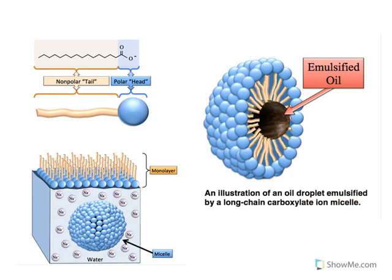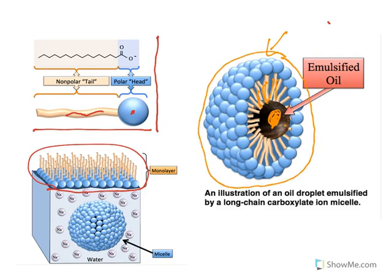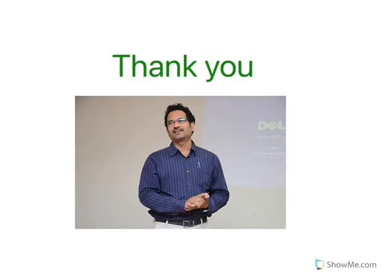To recap: long-chain fatty acids are amphipathic in nature — they have a polar head and a non-polar tail. They come together to form micelles, surrounding oil globules with their non-polar tails while the polar heads remain soluble in water, washing the oil away. This is saponification — the third major chemical property of triglycerides. Thank you for watching. If you like the video content, do subscribe.